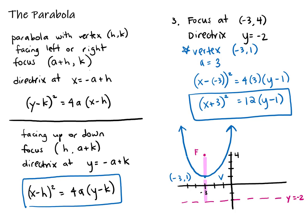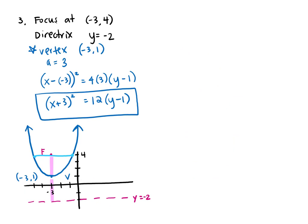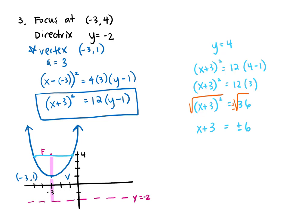To find the endpoints of the latus rectum, we know the y-values there equal 4. Plugging y = 4 into (x + 3)² = 12(4 - 1) = 36, we get x + 3 = ±6, so x = -3 ± 6. That gives x = 3 and x = -9. Our two latus rectum points are (3, 4) and (-9, 4).